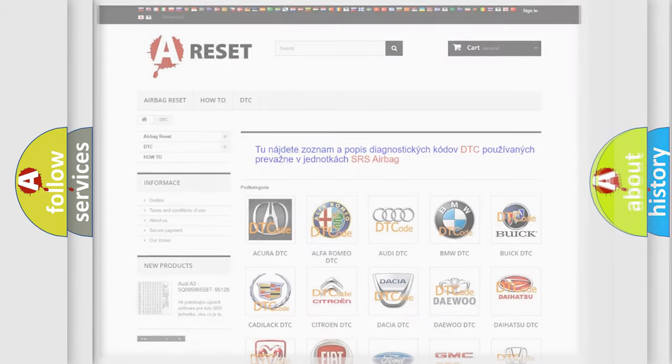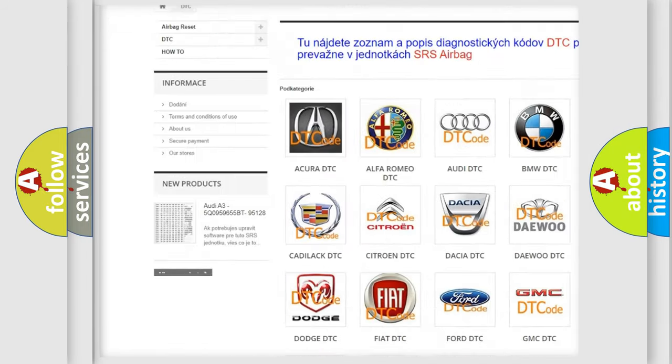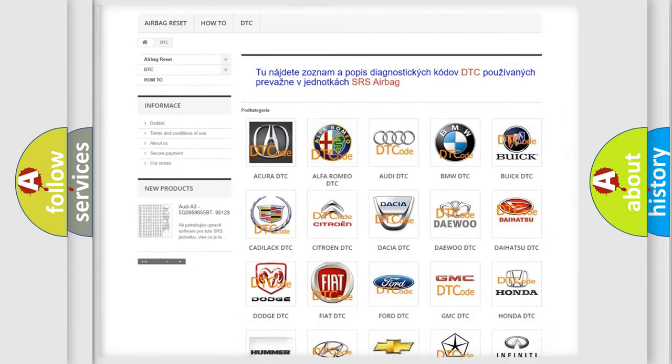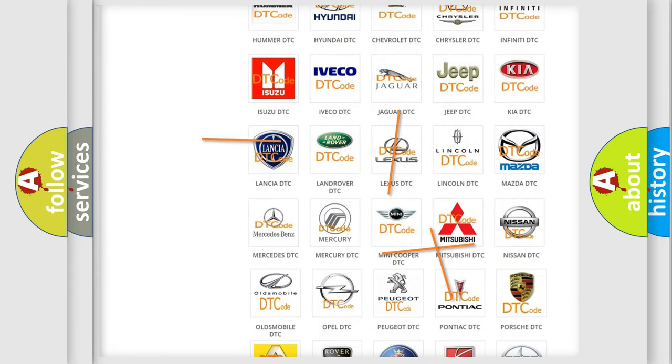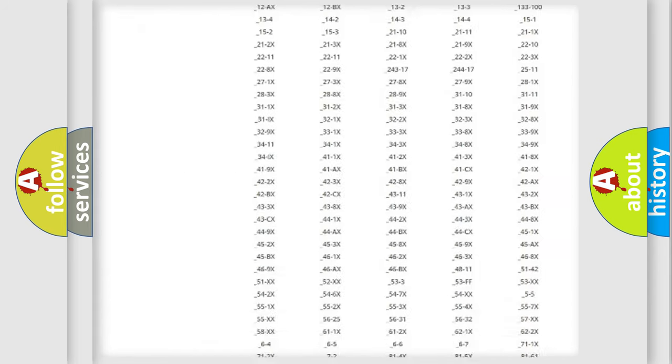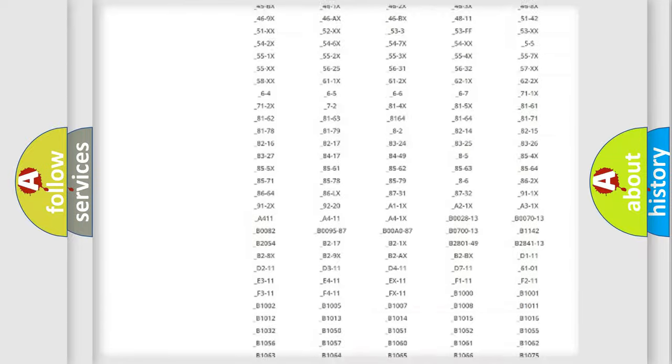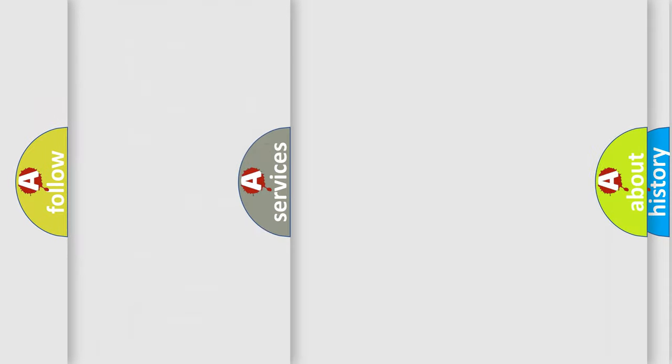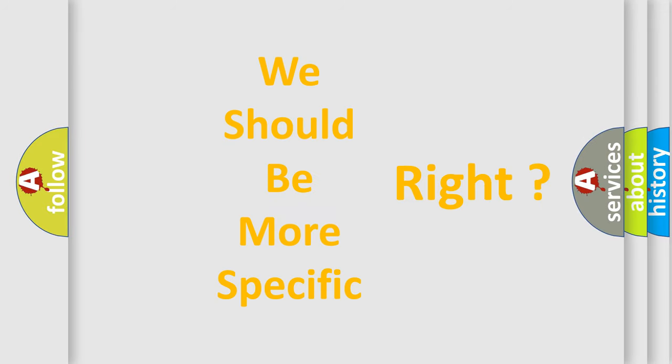Our website airbagreset.sk produces useful videos for you. You do not have to go through the OBD-II protocol anymore to know how to troubleshoot any car breakdown. You will find all the diagnostic codes that can be diagnosed in Mercury vehicles, and also many other useful things. The following demonstration will help you look into the world of software for car control units.